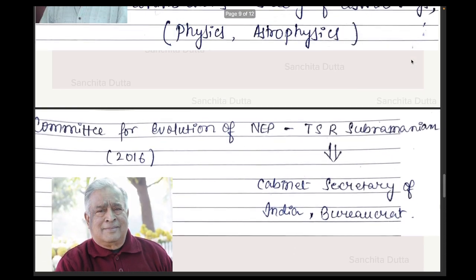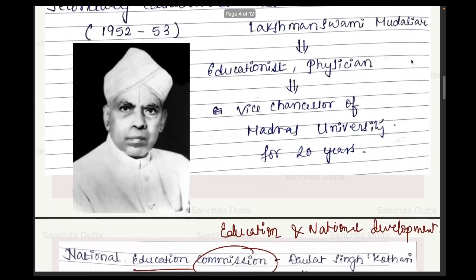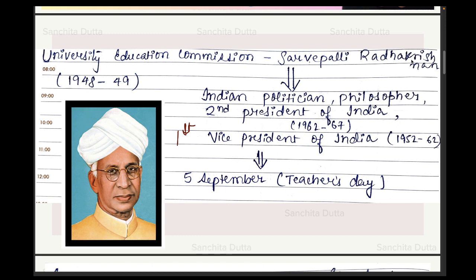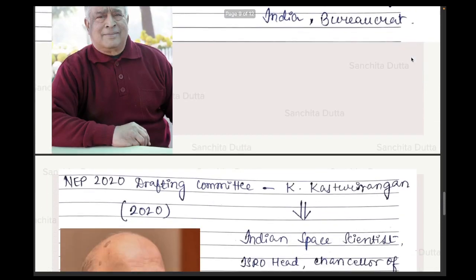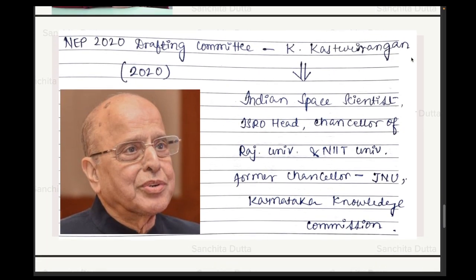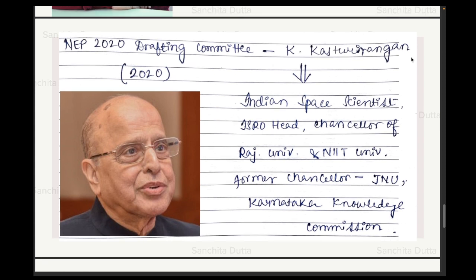So these were all the commissions, committees, and policies we needed to discuss along with their chairmen. Remember what you need to do: first, learn the names of education commissions, committees, and policies; remember their dates — try to memorize them in chronological order; remember the chairman's name; and always remember the title of the report. These four things — name, date, chairman, and report title — are what you must remember for each commission, committee, and policy. Try making short-hand notes as I have, and use them in your own study sessions.